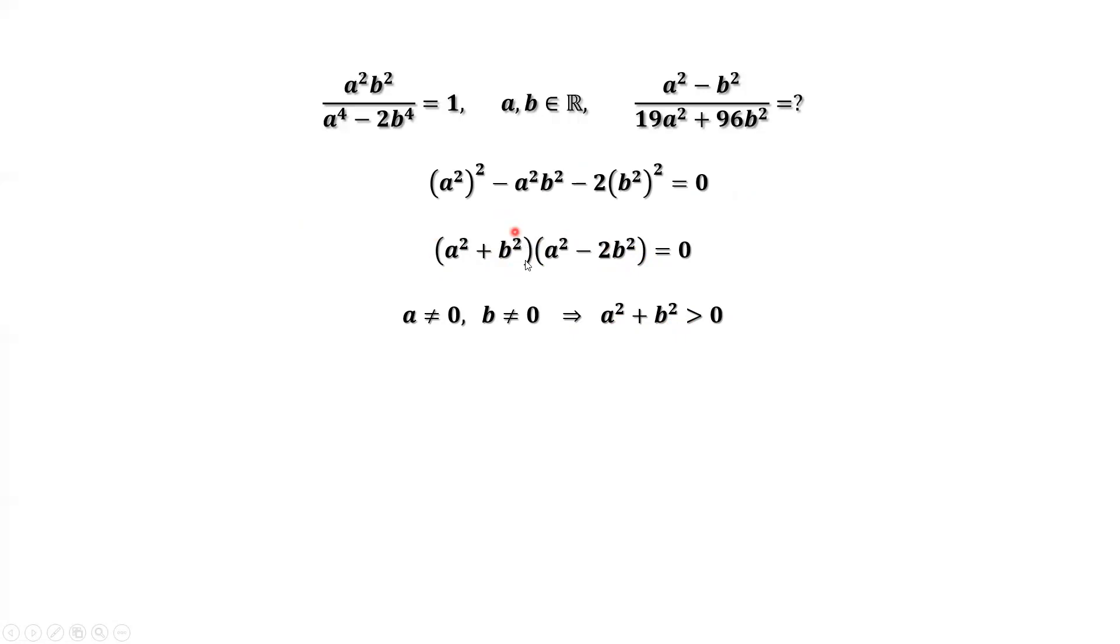The first factor is not zero. This implies the second factor is zero. This means a squared equals 2b squared.